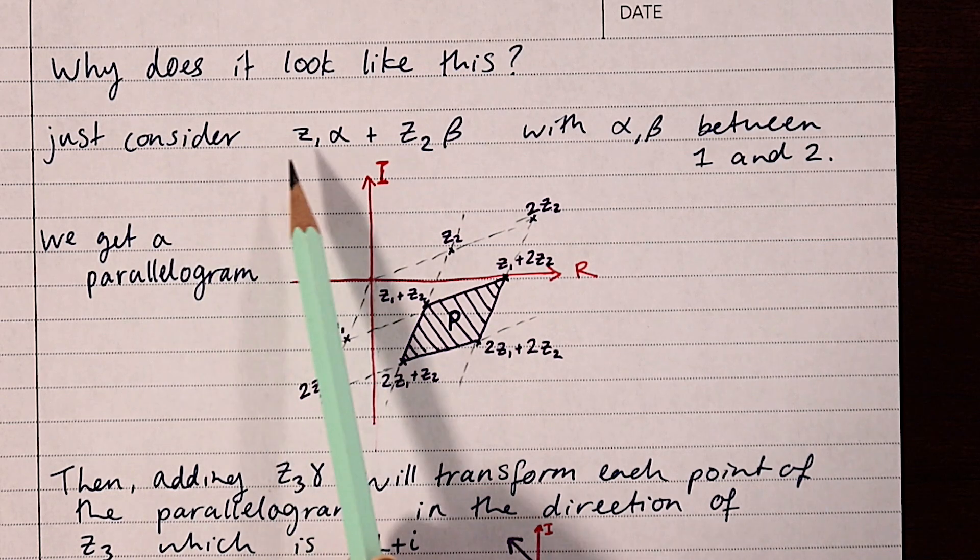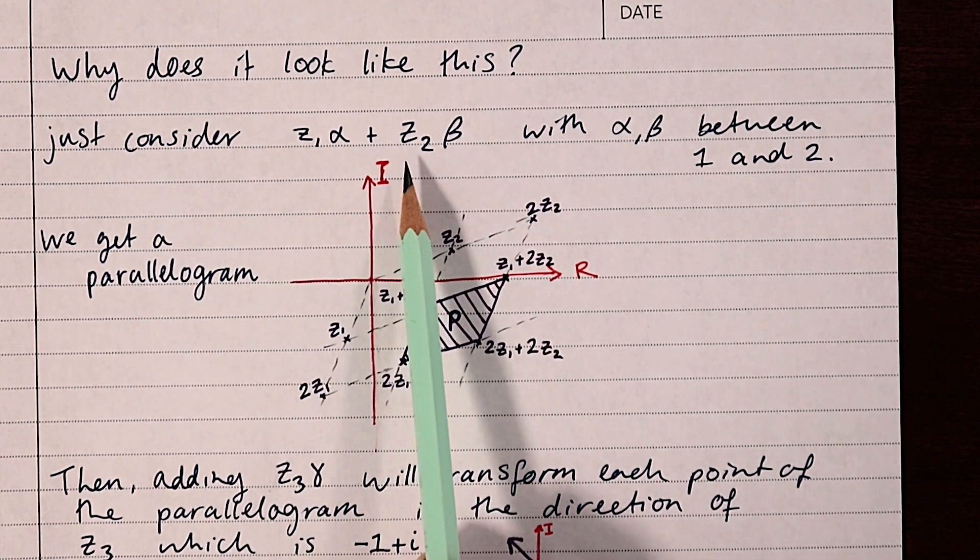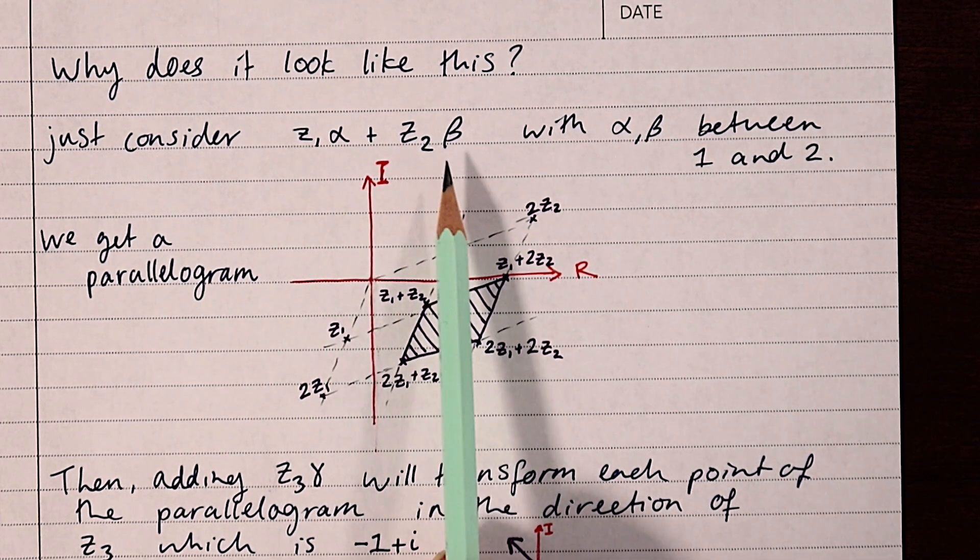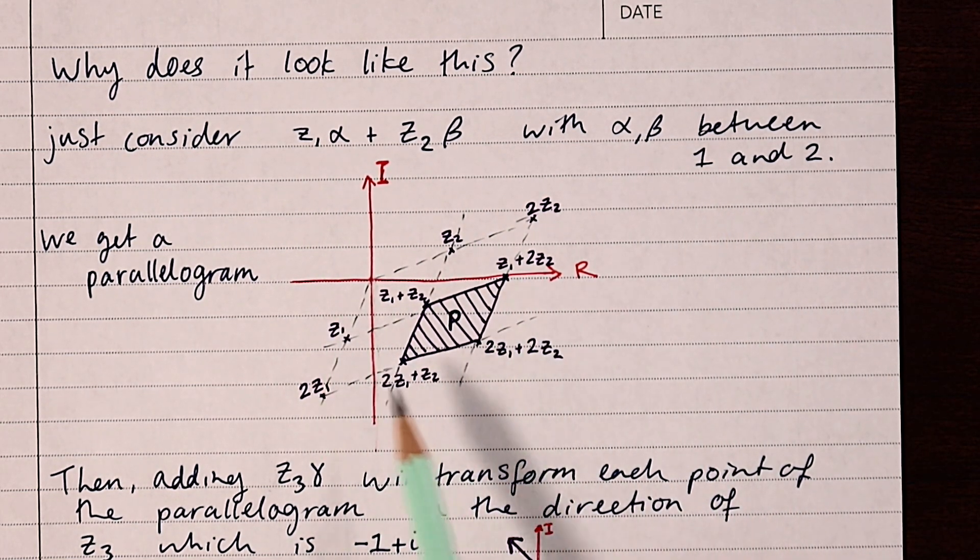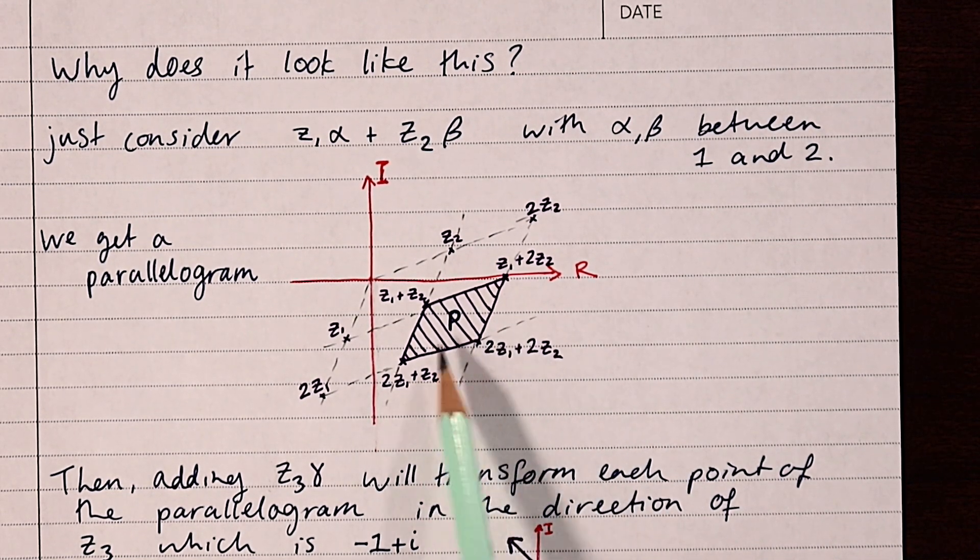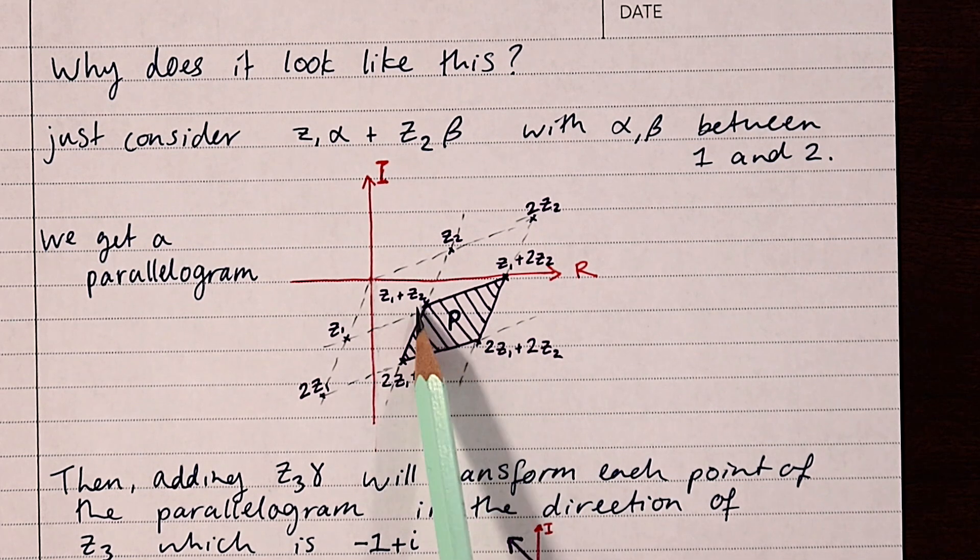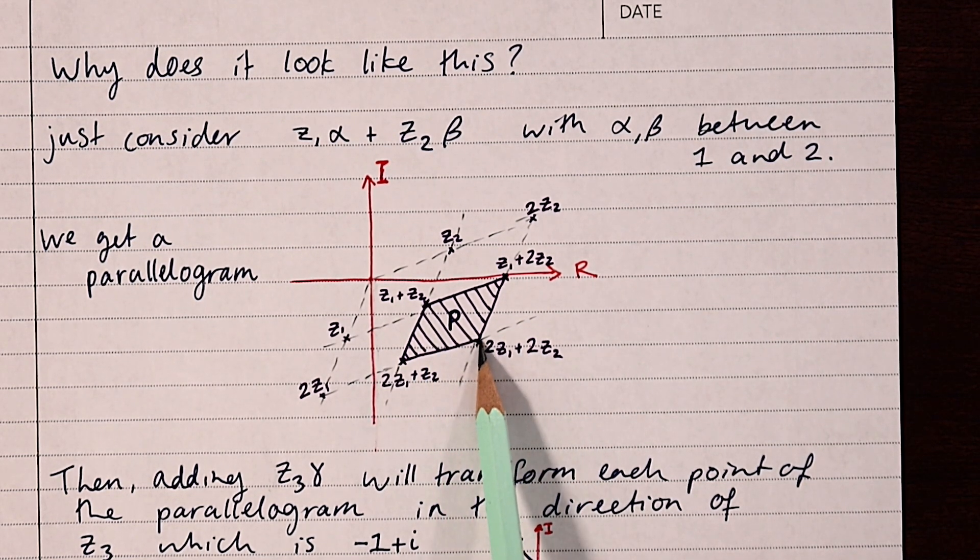Well, we can go back and consider the function with just alpha and beta, the first two terms. When we add these terms together with alpha and beta between one and two, we get something like this. It's actually a parallelogram of possible solutions. Here is the point where alpha and beta are one, and here is the point where they're both two.